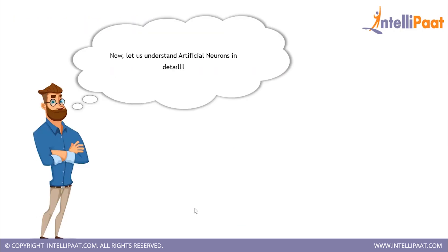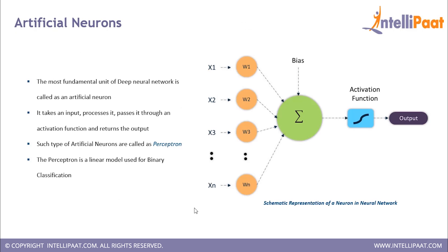Now let's understand these artificial neurons in detail. Artificial neurons are the most fundamental units of a deep neural network. They take an input, process it, pass it through an activation function, and return the output if the condition is met — or else process it again until the correct output is obtained. This type of artificial neuron is called a perceptron.